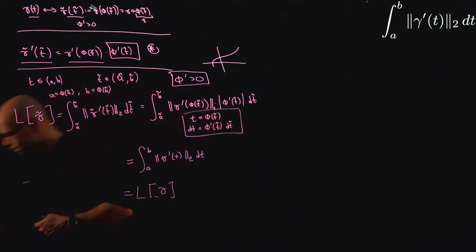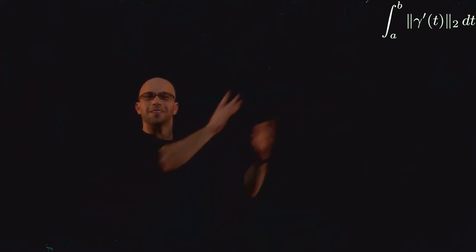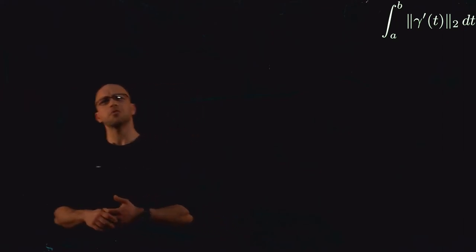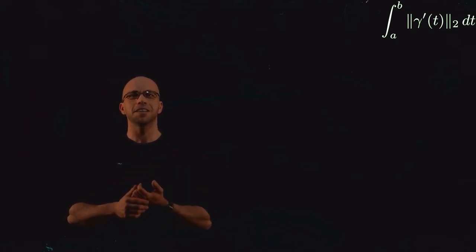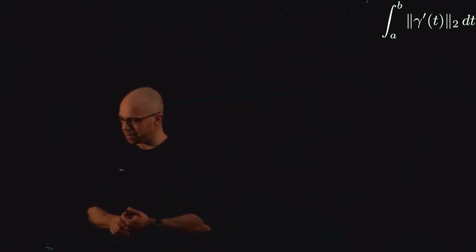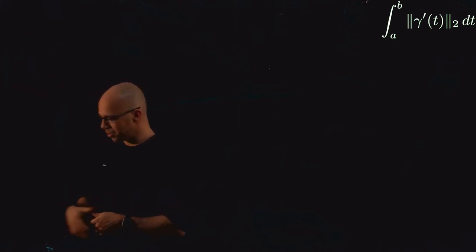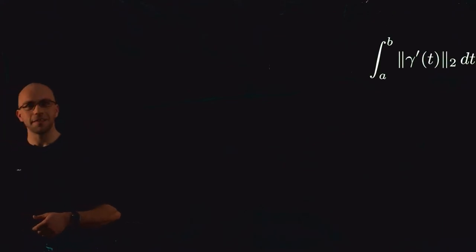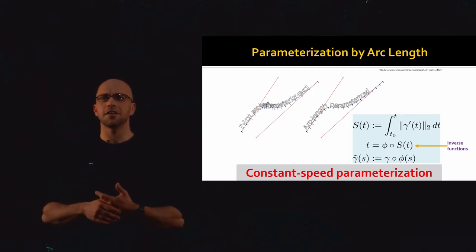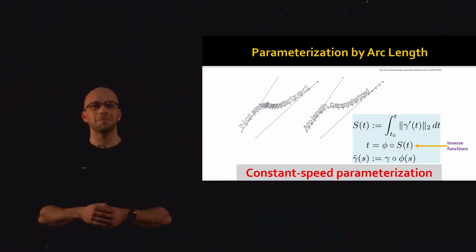We now have our first example of a measurement — arc length — that is invariant to reparametrization of a curve. Since there are so many different functions gamma(t) that all give us the same arc length, sometimes a useful thing is to choose a canonical function gamma(t). Rather than working with curves parameterized any way we want, instead we're going to work with curves specifically parametrized by arc length.